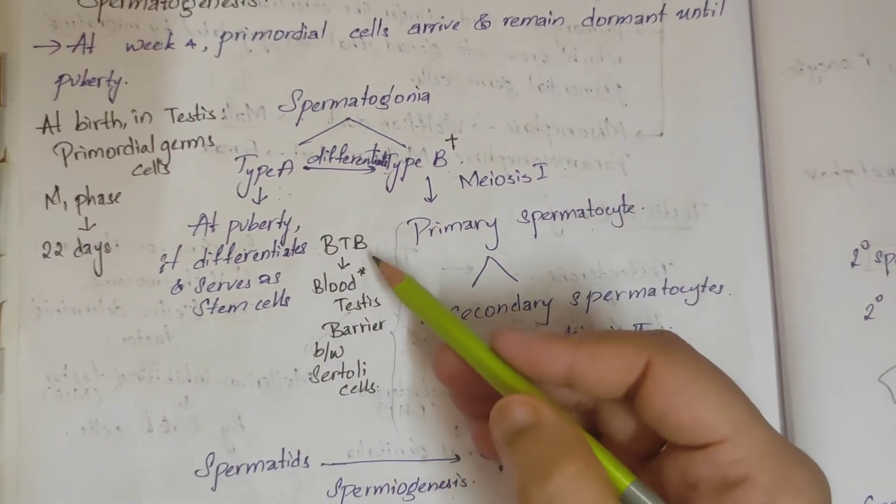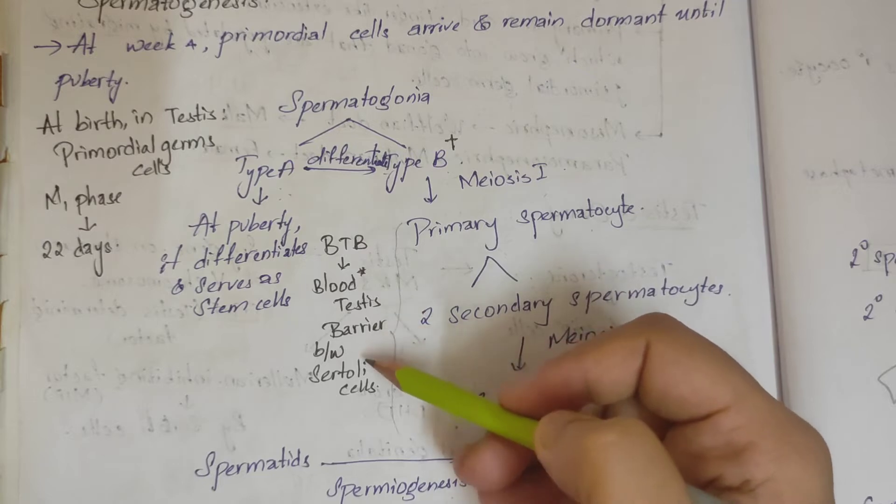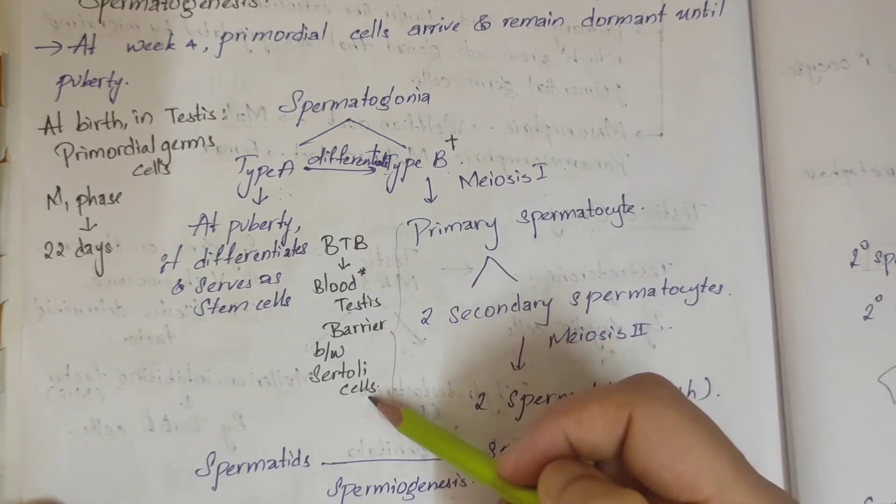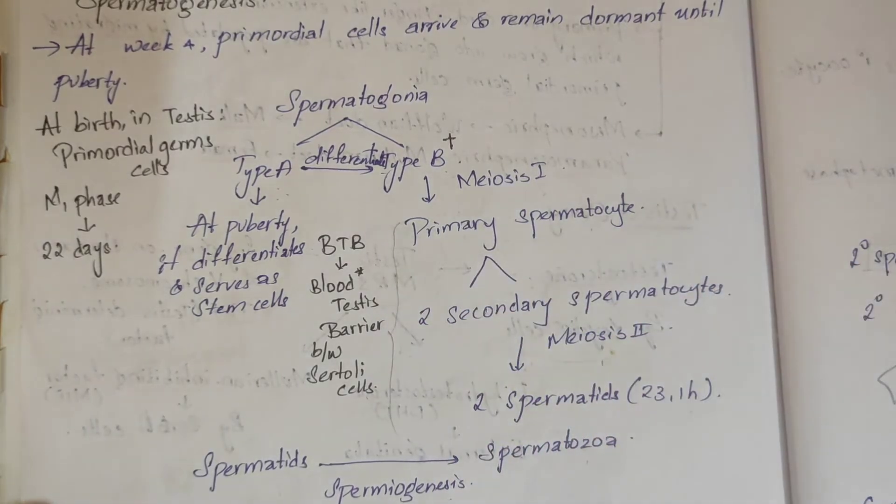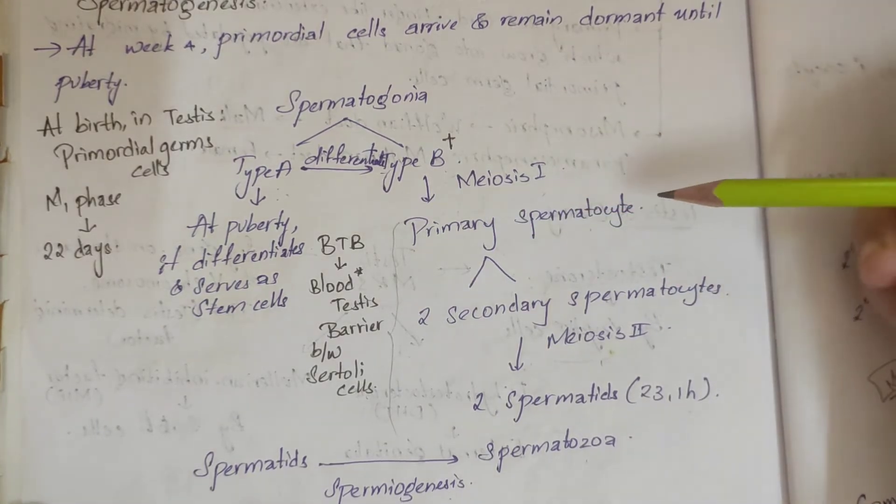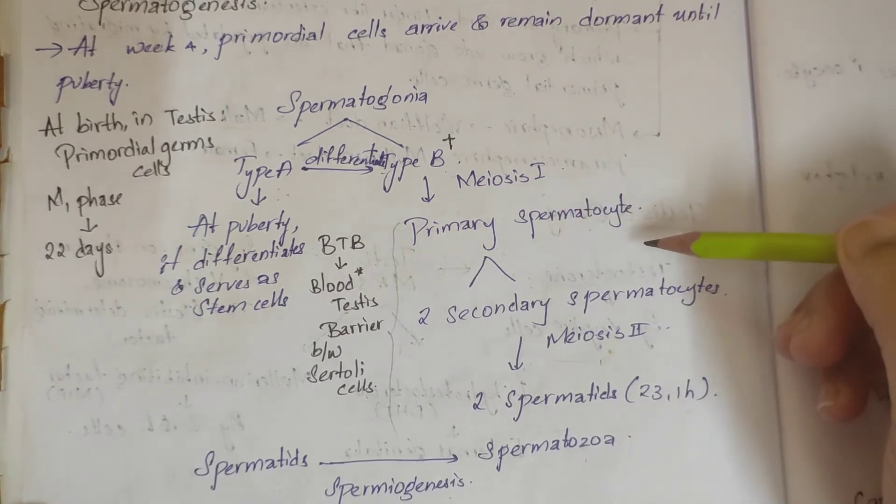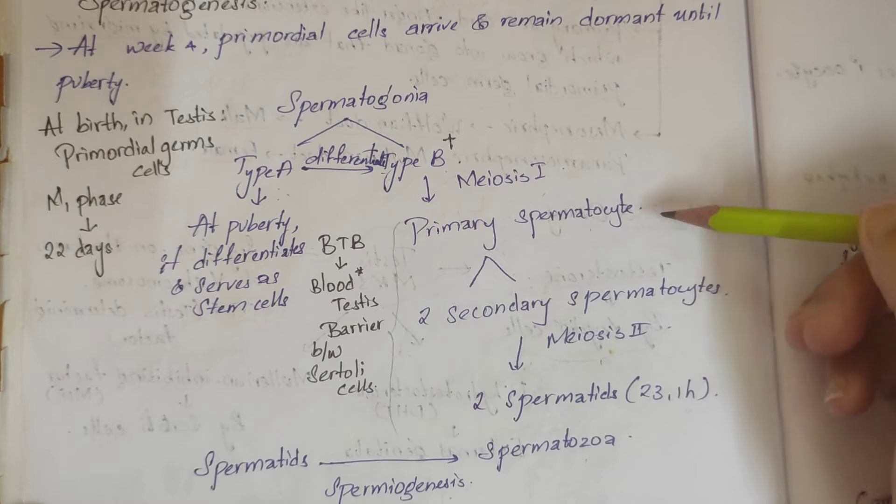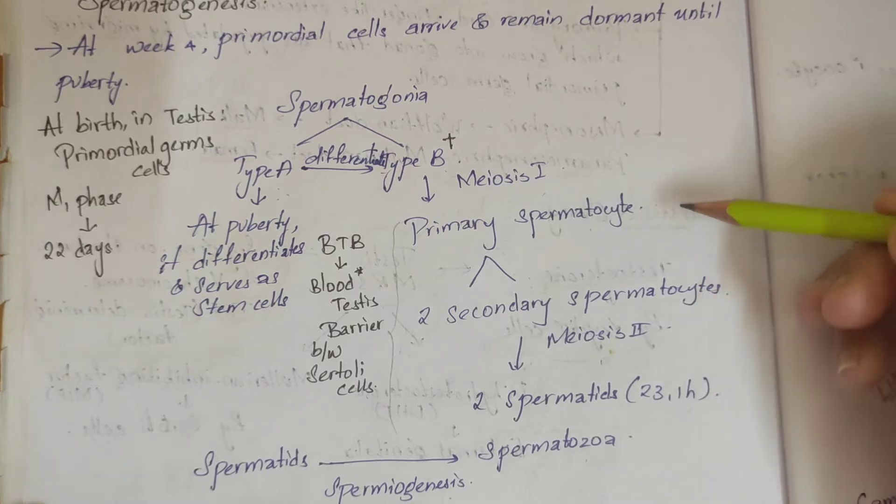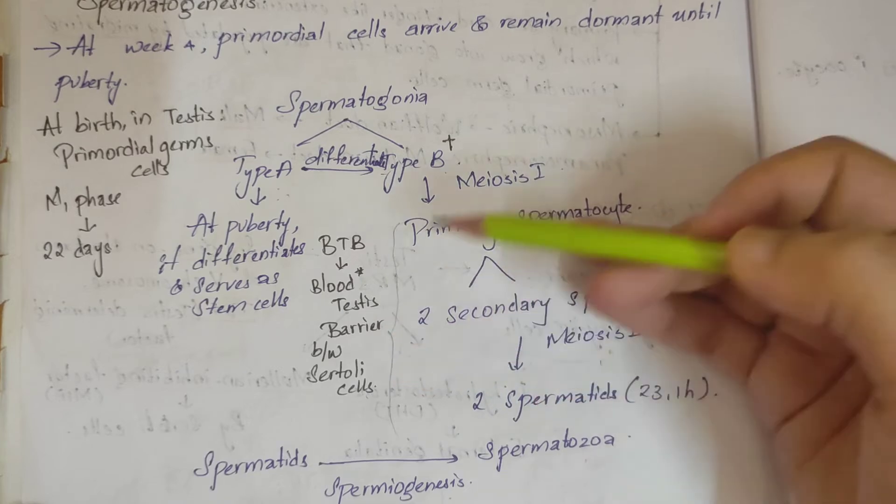Spermiogenesis involves morphological changes for spermatids to form into spermatozoa. There is something called BTB - the blood-testis barrier between Sertoli cells. This protects gametogenesis because these primary spermatocytes are new cells, so there is a chance of autoimmune damage. The blood-testis barrier between Sertoli cells protects this.